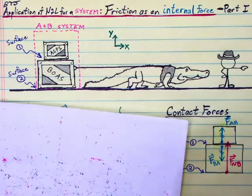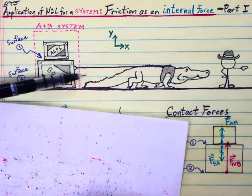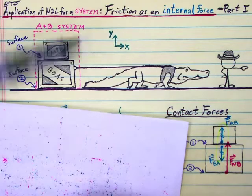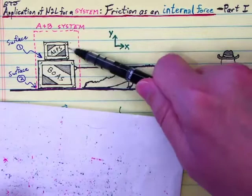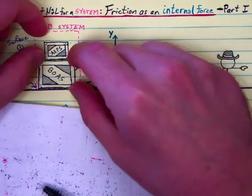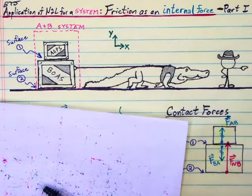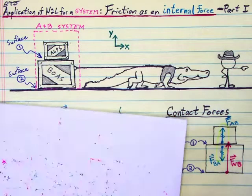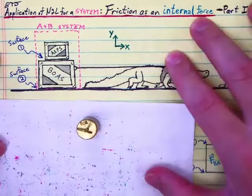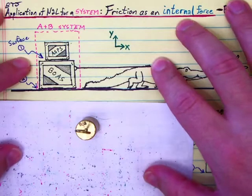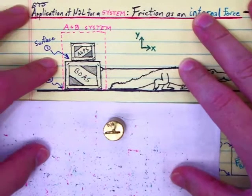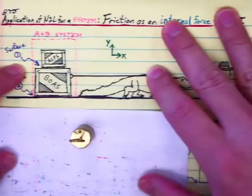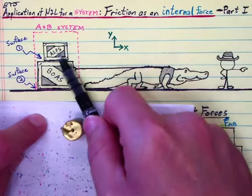If B is accelerating to the right, we know it would be the rope pulling B to the right, but what would be carrying A along with it? The rope is not attached directly to A, so it's not the rope pulling on A. If B is moving to the right and A is moving with it, then the only thing that could be accomplishing that would be friction at this surface dragging A along with B — just like if I have a mass on a piece of paper, I can accelerate the mass to the right because friction between the mass and the paper pulls the mass to the right.